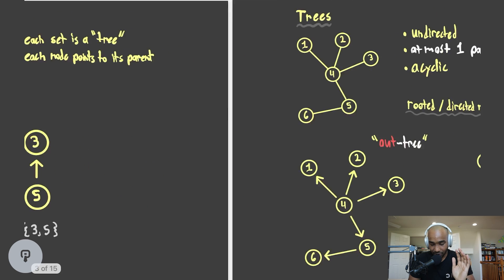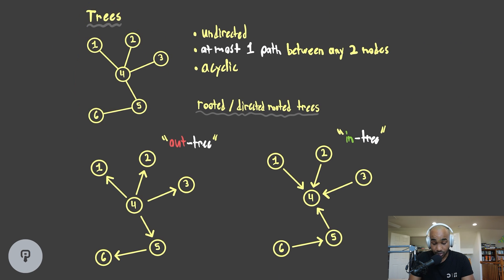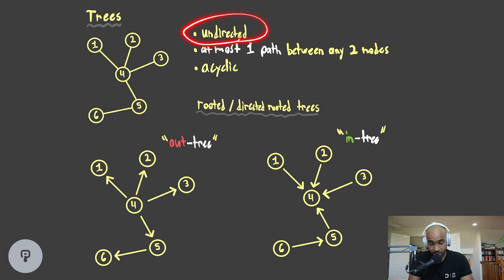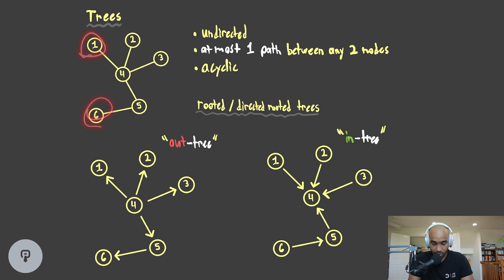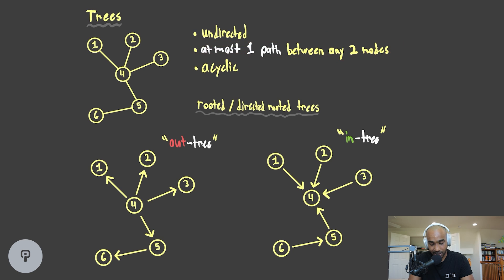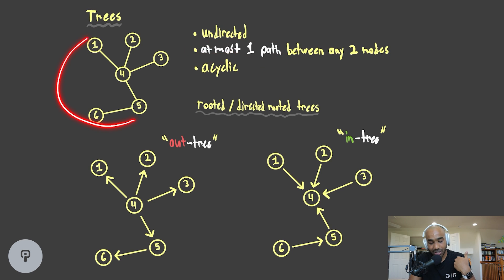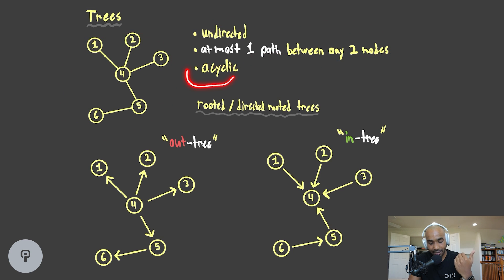Before we look at the operations, let's have our feet solid on the definitions for trees. Trees are a very specific kind of graph. In the most general case, a tree is undirected — by definition, it's undirected between any two nodes. For any two nodes, there's going to be at most one path between them, so there are no cycles. If I introduce an edge here, there would be two paths — at most one path is all we're allowed to have. So a tree has a very specific look; it's a specific kind of graph that's acyclic.